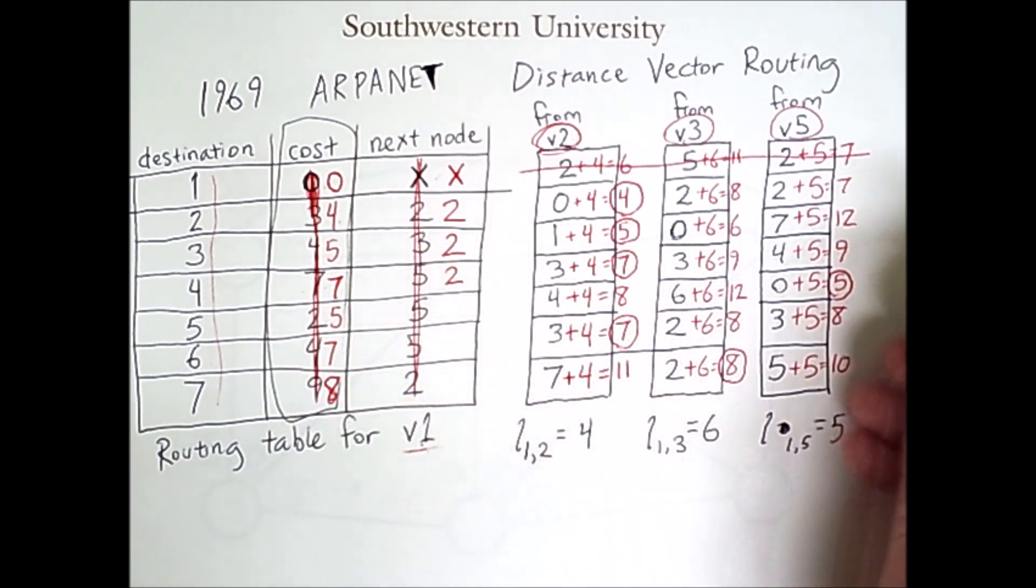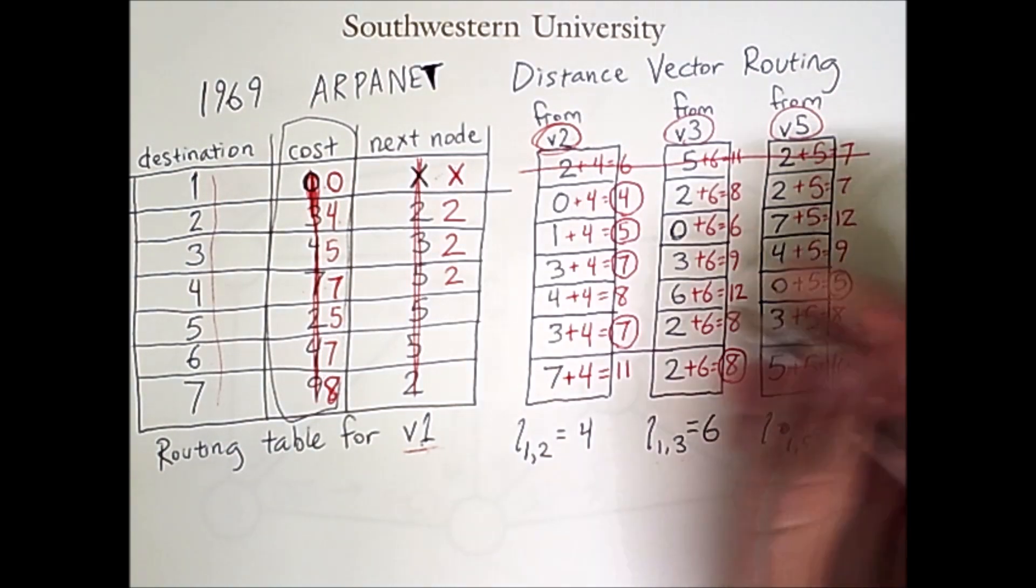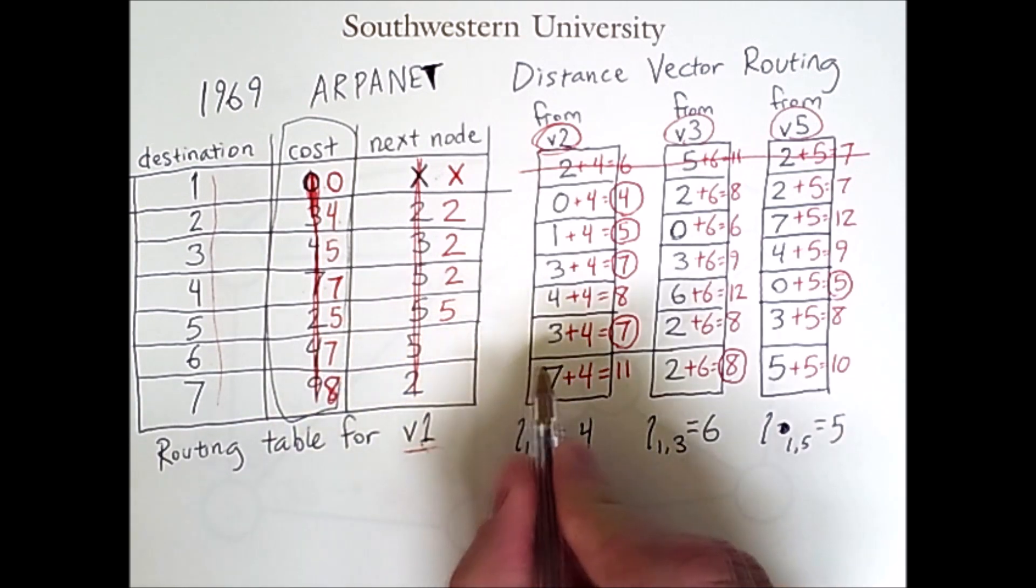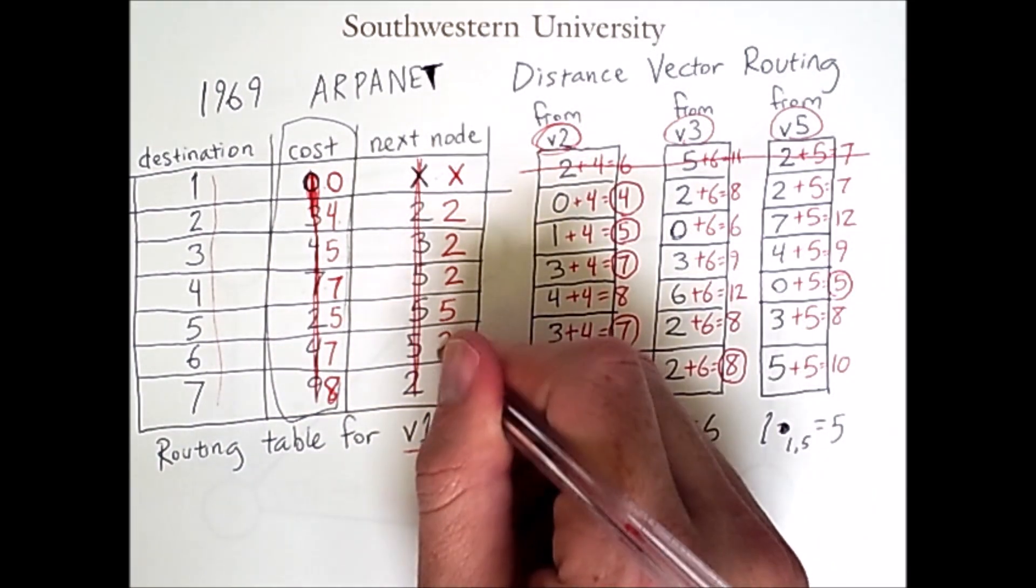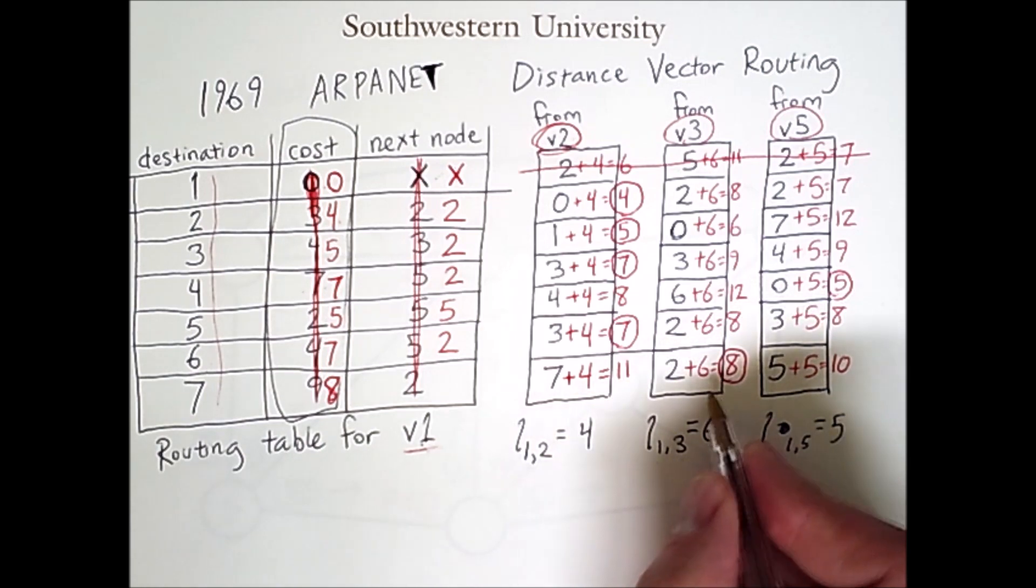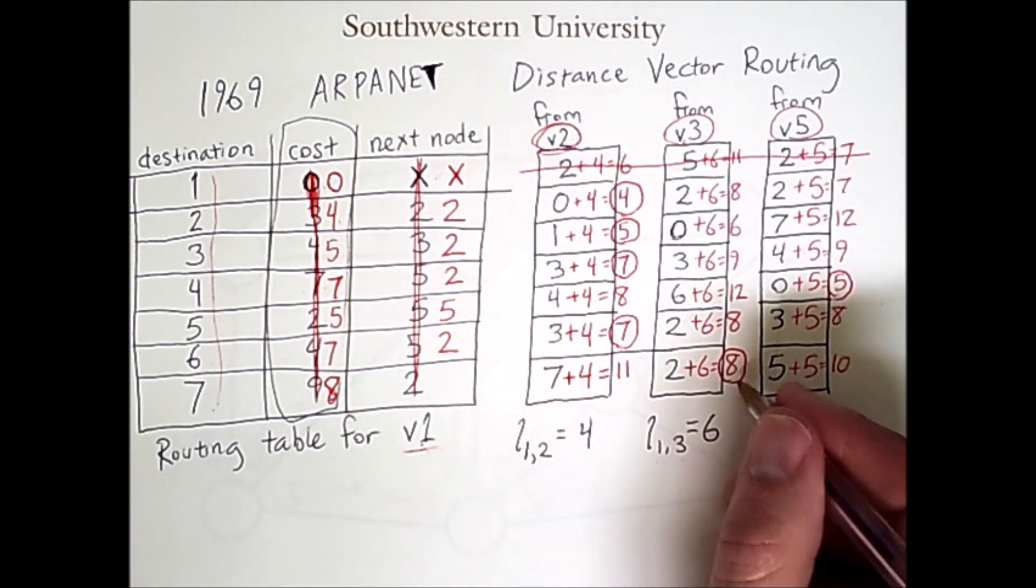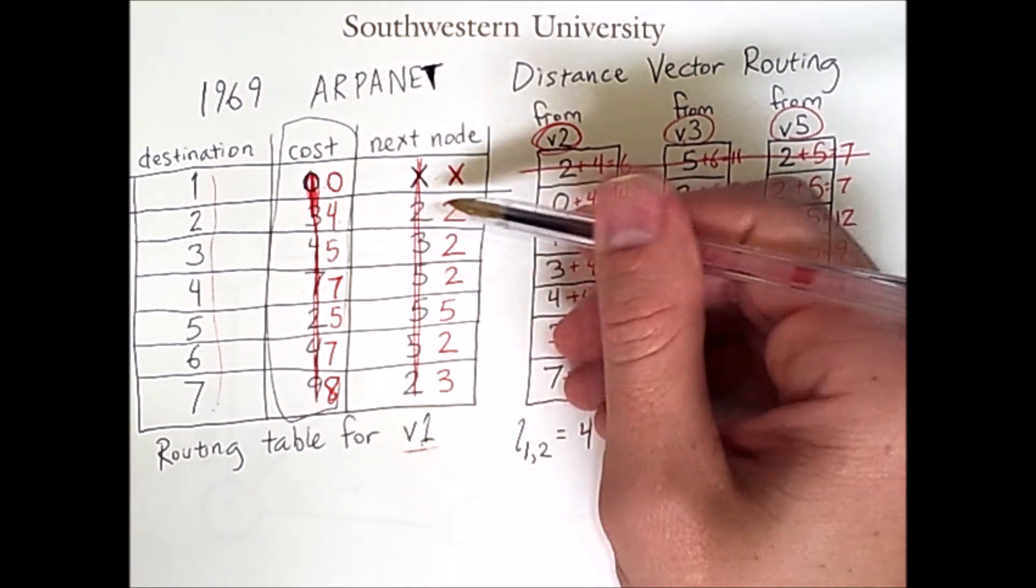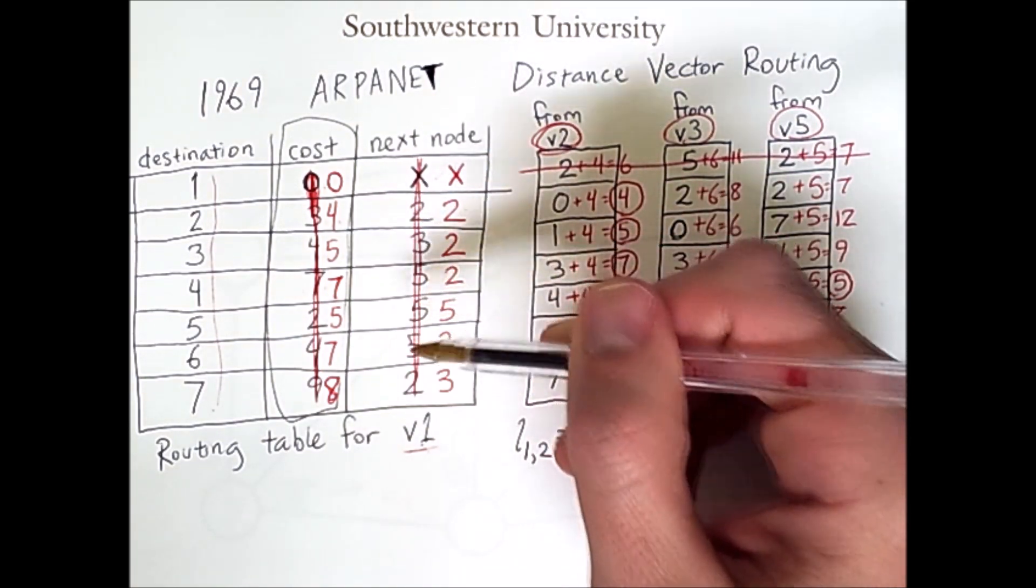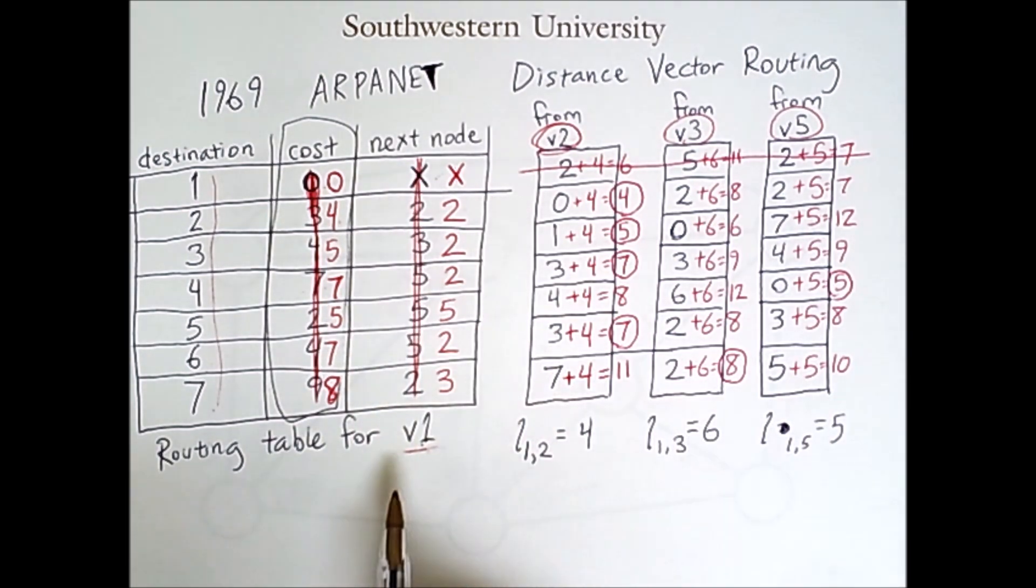Then we have the lowest cost of 7 to reach node 6 coming from neighbor V2. And then finally, the lowest cost to 7 via V3 is 8, so 8 is the minimum, so 3 goes here. Now, we can see that in some cases, the value did not change, but in other cases, it did. However, we didn't need to know what the values were before. We updated based purely on the new information. So we can see how changing network conditions can cause these tables to update and hopefully give us more efficient routes.